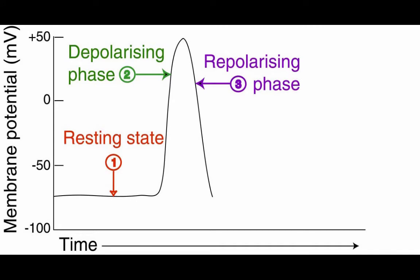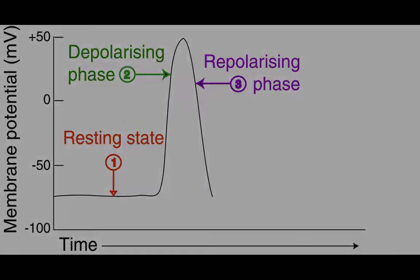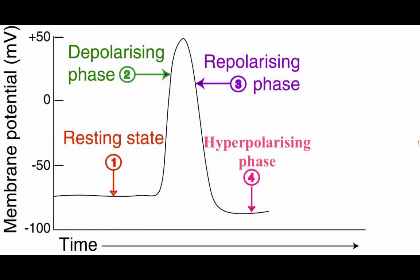During repolarization, the action potential has had another change in voltage. It has gone from positive 40 to negative 80 millivolts, or maybe even lower. This is called hyperpolarization.